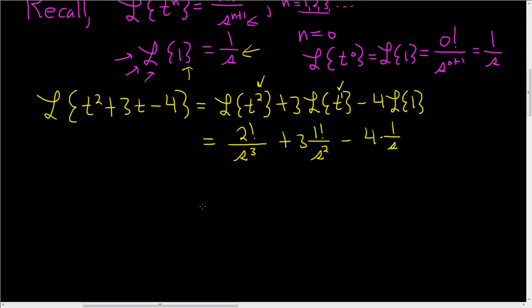So the final answer will be 2 over s cubed plus, well, 1 factorial is 1, so we just get 3 over s squared minus 4 over s. And that's it.